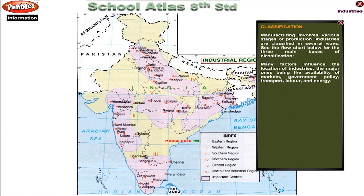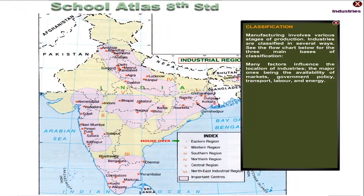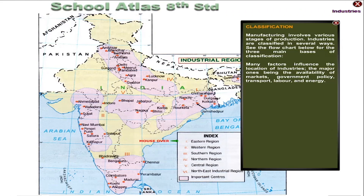Manufacturing involves various stages of production. Industries are classified in several ways. See the flowchart below for the three main bases of classification.